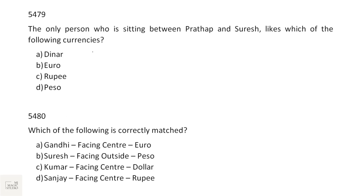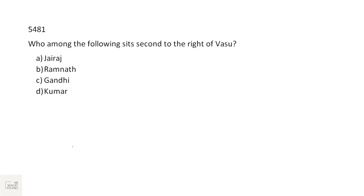The only person sitting between Pratap and Suresh is Ramnath. Ramnath likes which currency? — Peso. Which of the following is correctly matched? Gandhi, Suresh, Sanjay facing center and liking Rupee — Option D. Who sits second to the right of Vasu? Vasu faces away from the center; second to the right of Vasu is Jairaj.